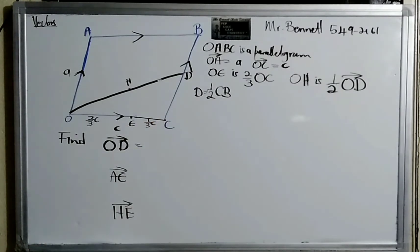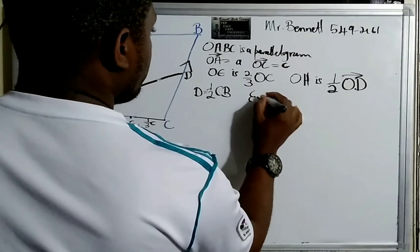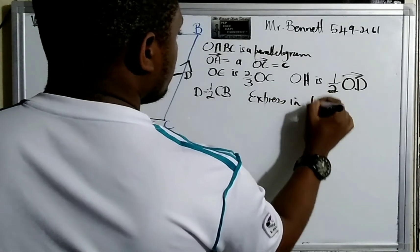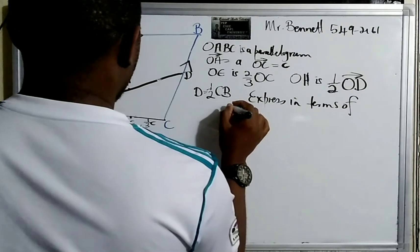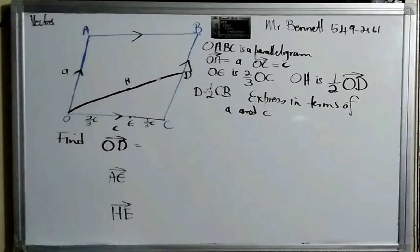All right, so now they ask us to find the vector from O to D, and we must express it in terms of a and c. All right, let's go.